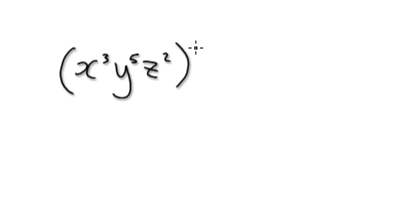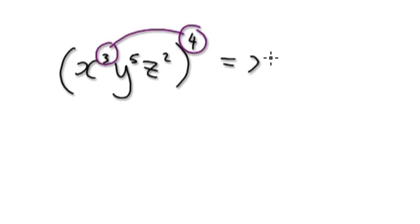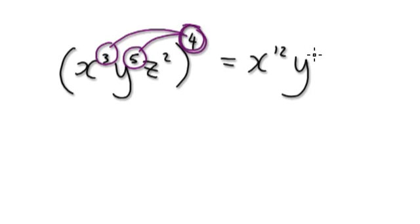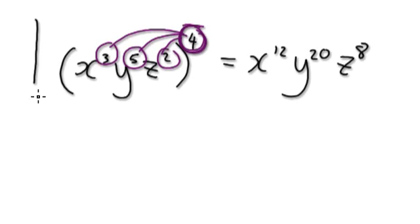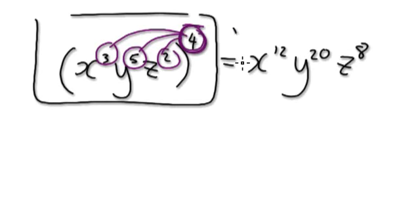In the previous video, I showed you something like this: x to the power of 3, y to the power of 5, z to the power of 2, and then you power this to the power of 4. To do this, you would just multiply the exponents. So that would be x to the power of 12, y to the power of 20, and z to the power of 8. This whole thing becomes this.